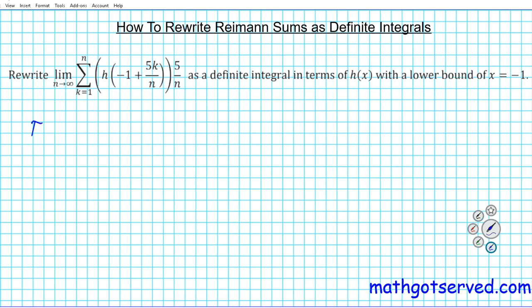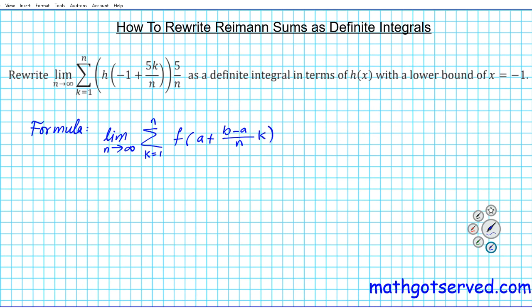To get us started, let's take a look at the formula that's going to guide our problem solving process. If you're given a Riemann sum in this form — limit as n approaches infinity, sum from k equals 1 to n of some function — it's going to be a function of a plus (b minus a) over n times k. If you want to rewrite it as a definite integral, it's simply going to be the integral from a to b of f of x dx.